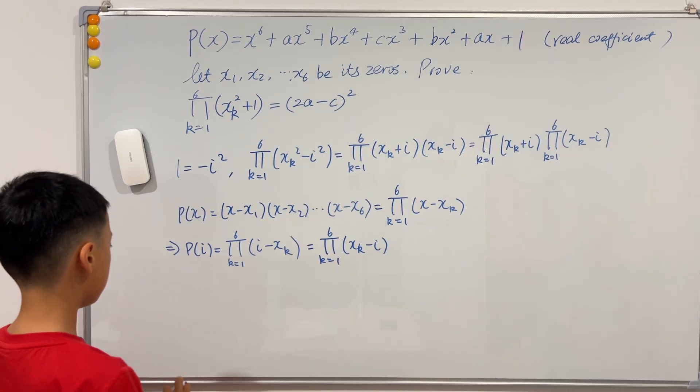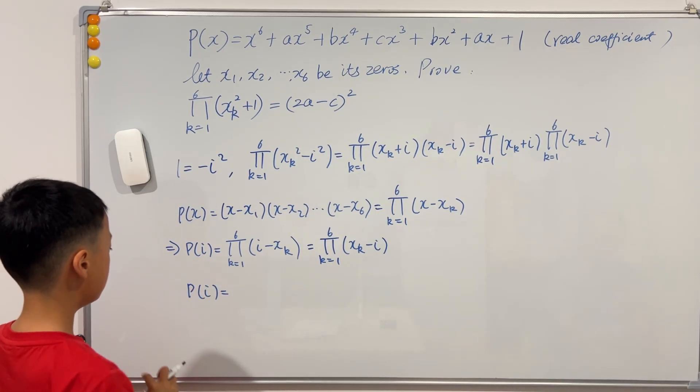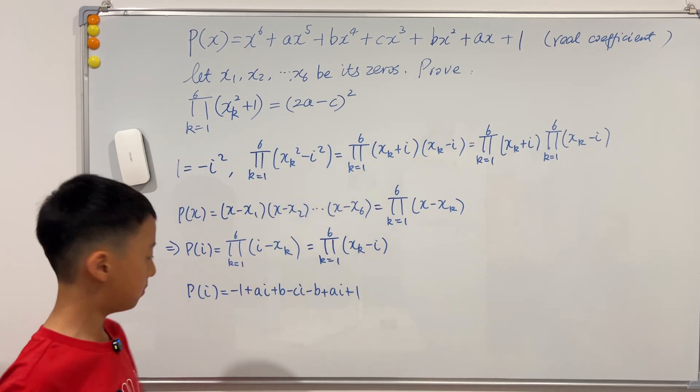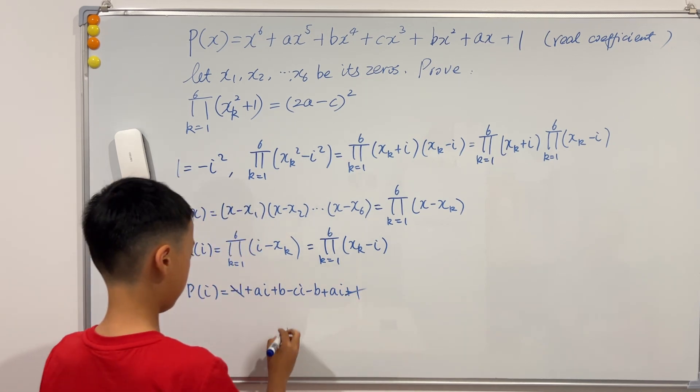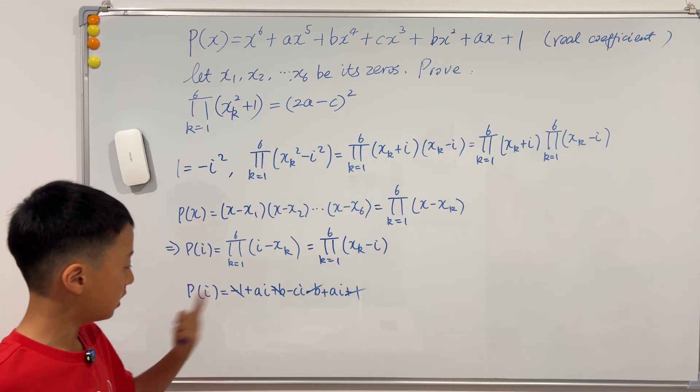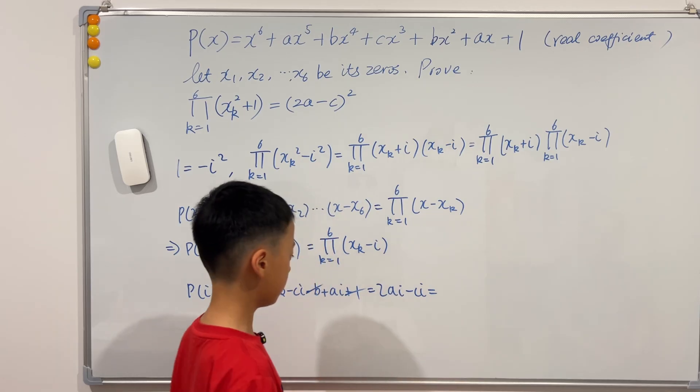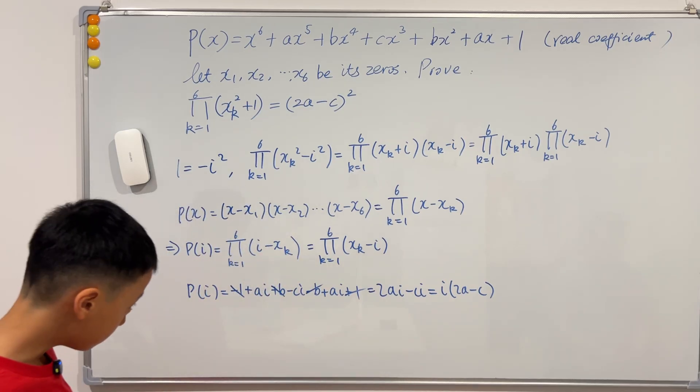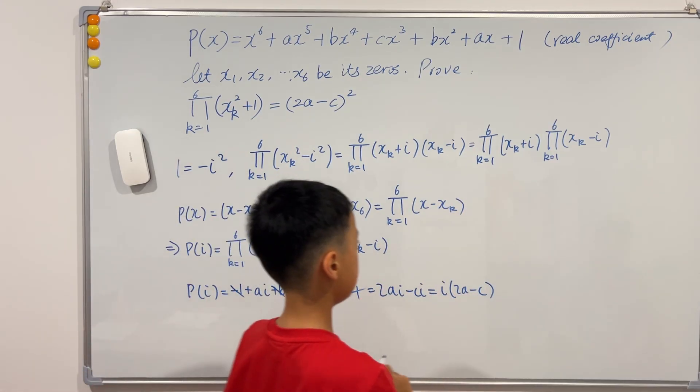So now the question is, what is P of i? Well, it's pretty easy and straightforward. Just plug in i to all of the x's and the result will be the result. And now we can do some cancellations. Cancel, cancel, cancel. So now I'm going to collect the like terms. So we have 2a i minus ci. And now if we factor out an i, it will be i times 2a minus c. So now we know that this second capital pi is just this, and I'm going to write it here.